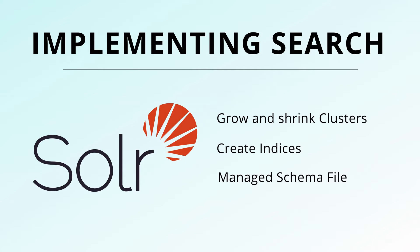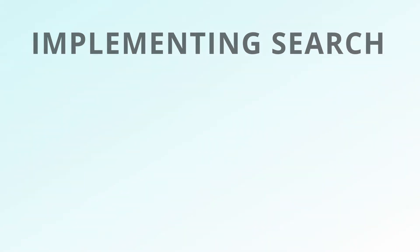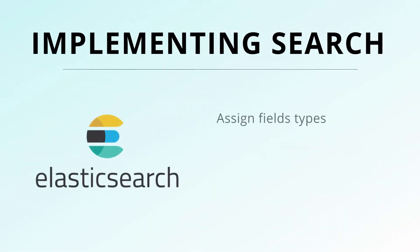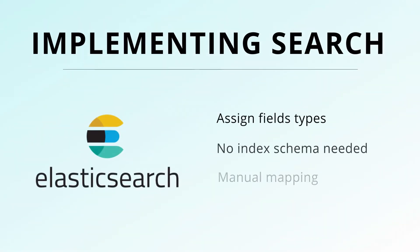On the other hand, Elasticsearch's big advantage over Solr is the ease of getting started. Field types are assigned automatically as your data is indexed into Elasticsearch. Unlike Solr, you don't need an index schema for your data. While not totally accurate, you can create manual mapping to ensure search relevance.